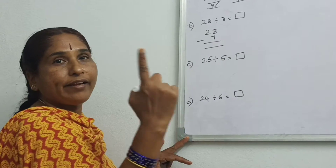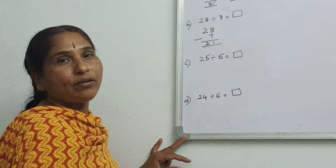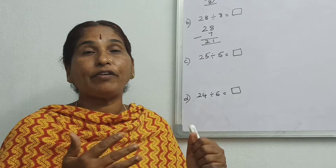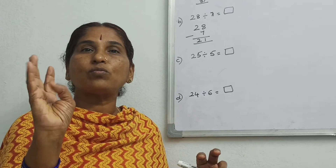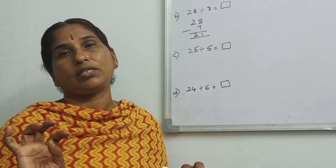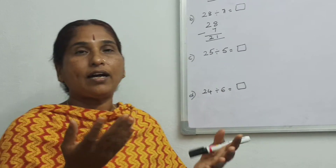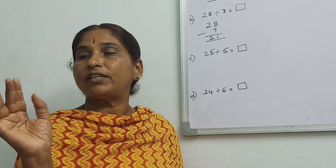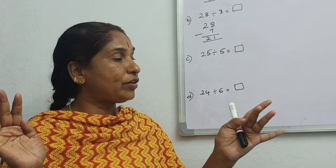Then you have to subtract. You can subtract counting up from 7: 8, 9, 10... all the way to 28. Or you can use your fingers. Count 7 upward: 8, 9, 10, 11, 12, 13, 14, 15, 16, 17, 18, 19, 20, 21, 22, 23, 24, 25, 26, 27, 28. That gives 21.